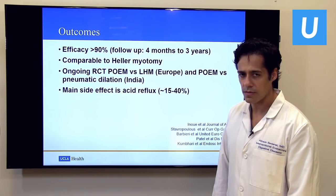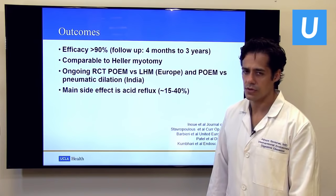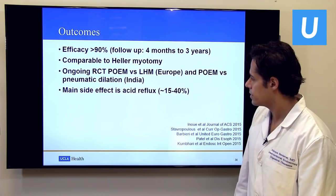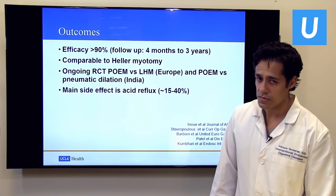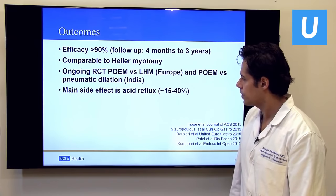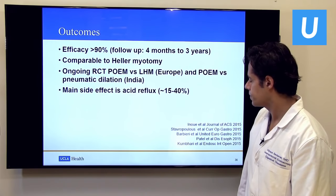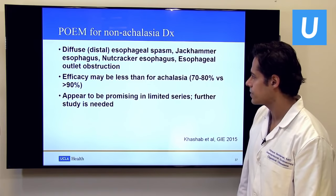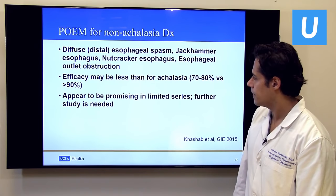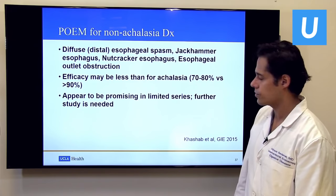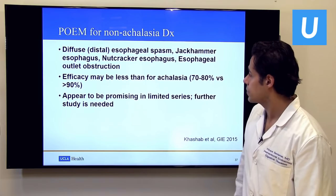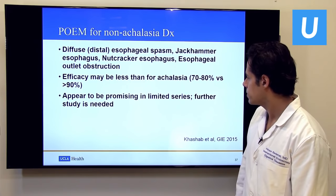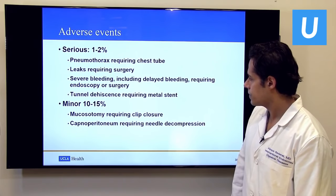Outcomes are very promising. More than 90% of patients have resolution or near-complete resolution of symptoms — their lives are completely changed; they can eat what they want and gain weight. POEM appears comparable to Heller myotomy and may be better for type 3 achalasia. Ongoing comparative trials are looking at POEM versus other modalities. The main side effect is acid reflux, occurring in 15–40% of patients. Non-achalasia spastic disorders may also be treated with POEM, with somewhat lower but still encouraging efficacy.